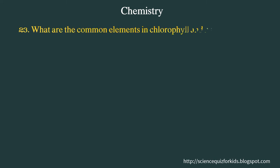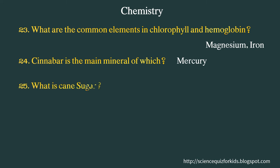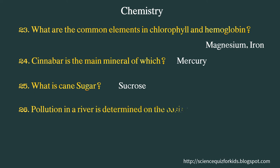What are the common elements in chlorophyll and hemoglobin? Magnesium and iron. Cinnabar is the main mineral of which element? Mercury. What is cane sugar? Sucrose. Pollution in a river is determined on the basis of what percentage? Oxygen.